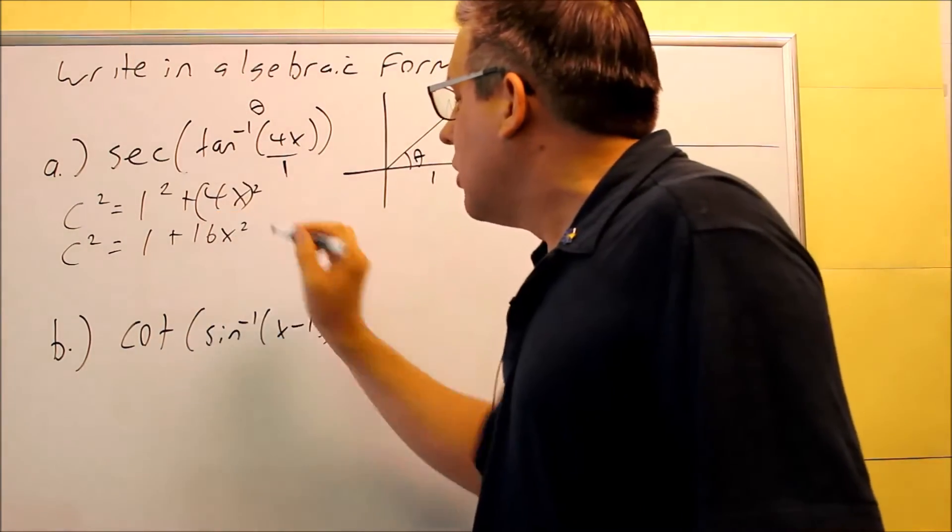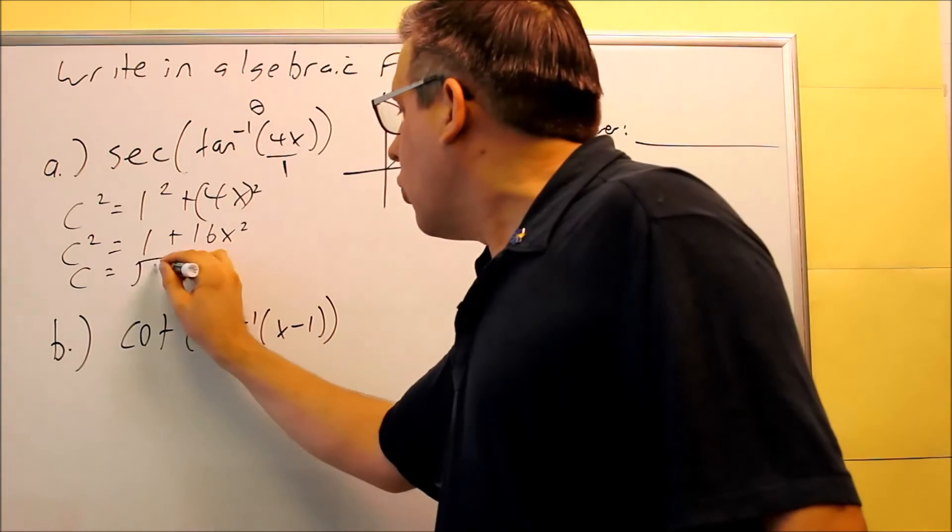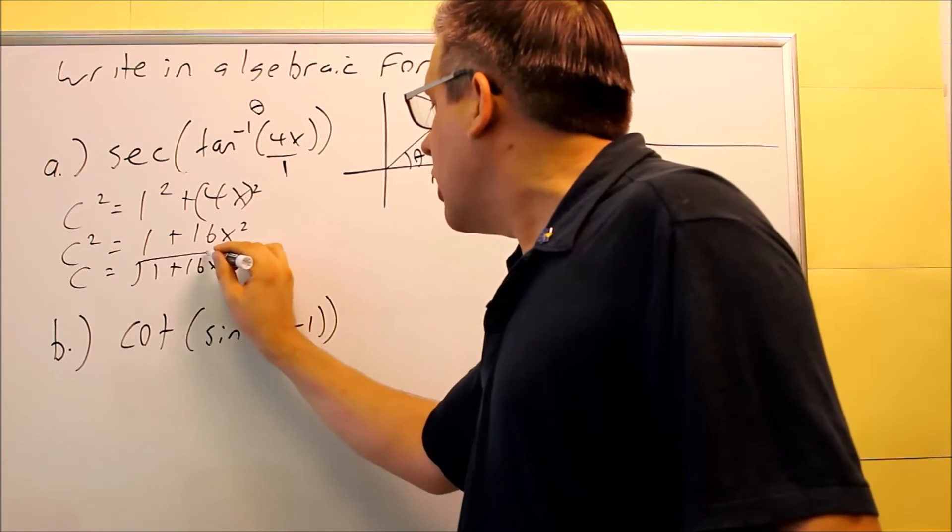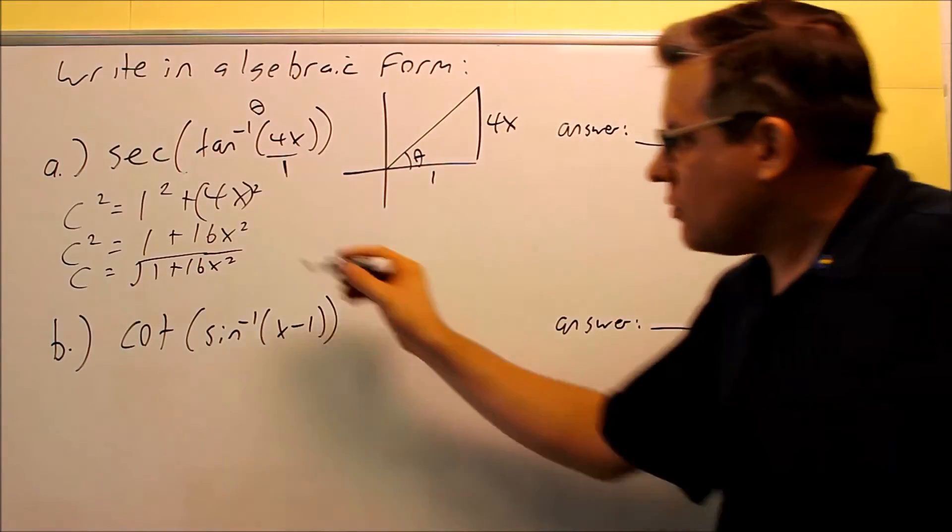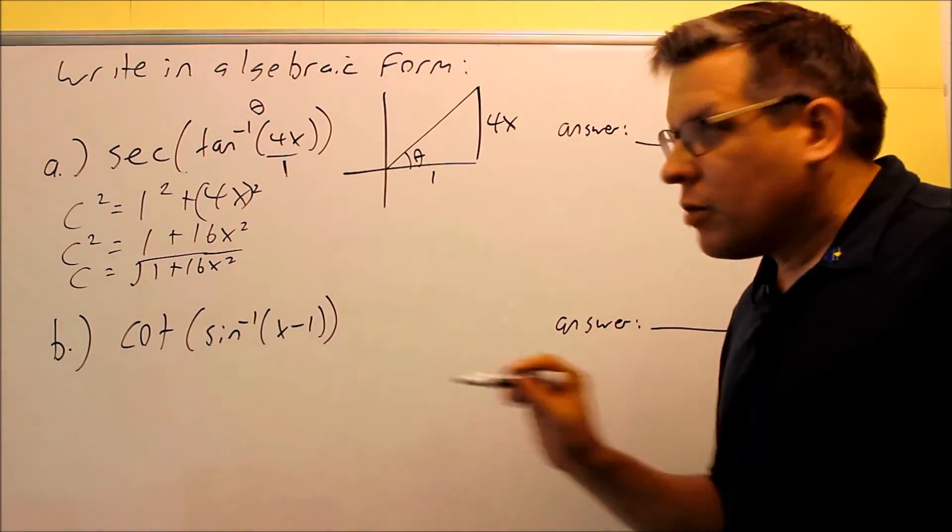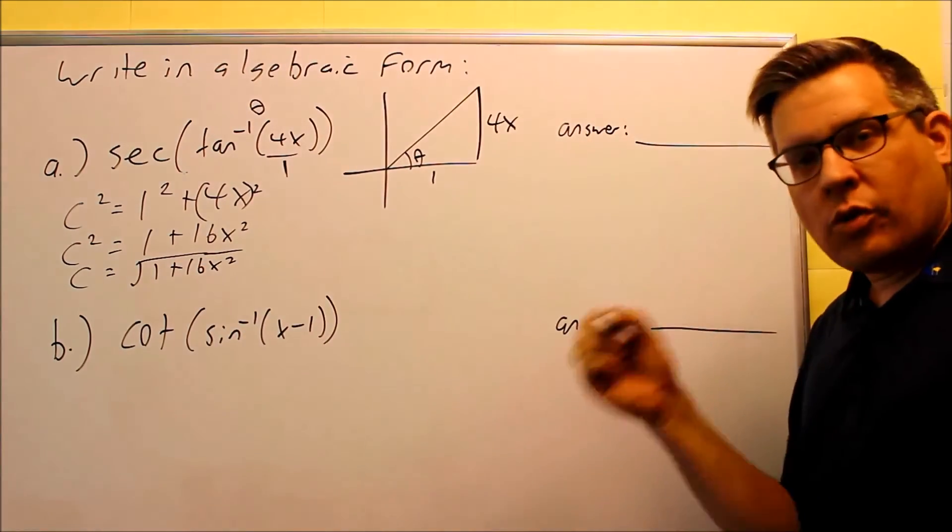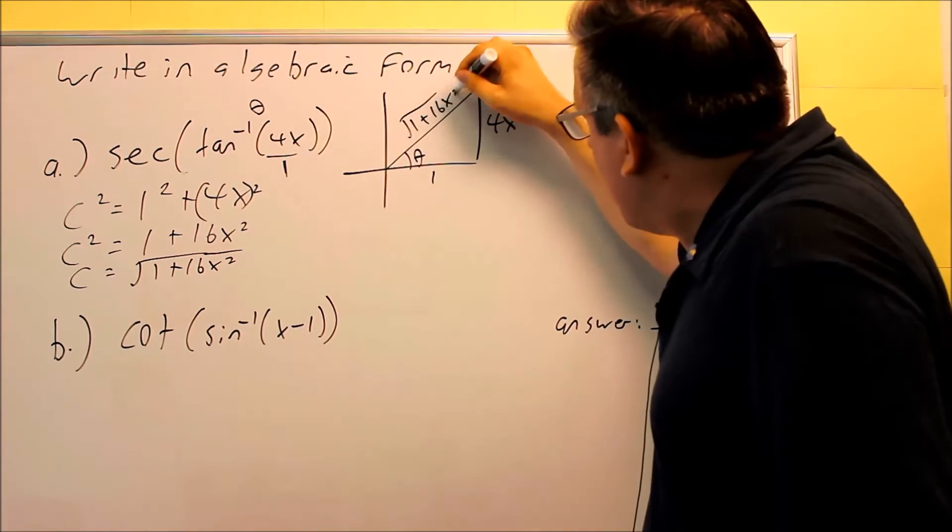That's the most common mistake that I see is people forget to put those parentheses there. So you're going to get 16x squared, and then you're going to square root both sides, and you get 1 plus 16x squared. We're only considering the positive square root here because your hypotenuse is always positive. You can't break that down anymore because there's a plus sign. You can't square root each of those individually. So you'll get 1 plus 16x squared here.